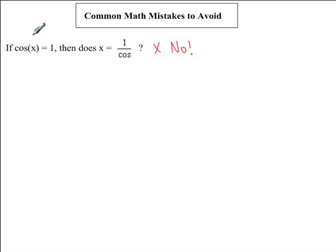You might be wondering then, how would we solve for x if cos of x is equal to 1? Well, what this means is that we need to find a value for x such that once we take the cosine of this value, we will get 1.